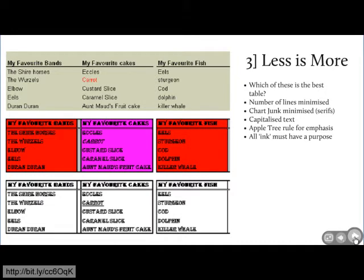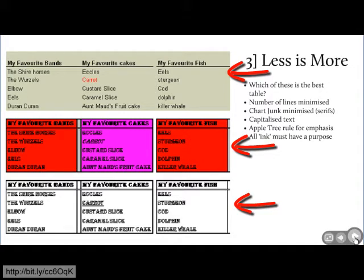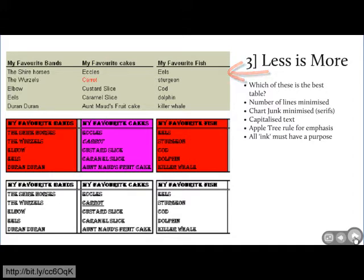Third tip is a general discussion point: less is more. The question is, which of these three identical tables is the best one — formatted differently? I hope you'll agree the top one is best. First, the number of lines has been minimized. In the bottom two tables there are lots of horizontal and vertical lines that just aren't necessary. There's only one set of horizontal lines in the top table.